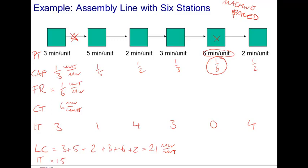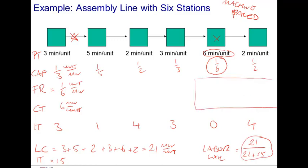We define the average labor utilization as twenty-one minutes of labor content divided by twenty-one plus fifteen, which gives the average utilization in this process. We also compute the cost of direct labor as wages divided by flow rate. If each of my six workers is making twenty dollars per hour, then wages are six workers times twenty dollars per hour, divided by the flow rate of ten units per hour. This gives a direct cost of labor of twelve dollars per unit.